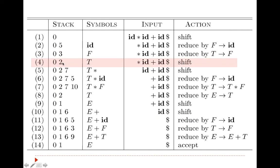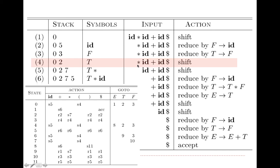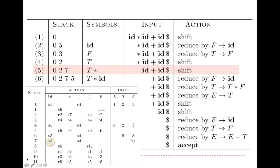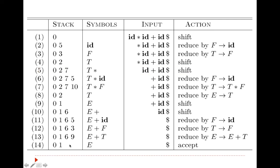Then we have 2 and star. We refer to 2 and star and get s7, meaning shift. So star is shifted and state 7 is pushed onto the stack. Now it is 7 and id. We refer to 7 and id, which is a shift action. So id is shifted onto the stack and state 5 is also pushed onto the stack.